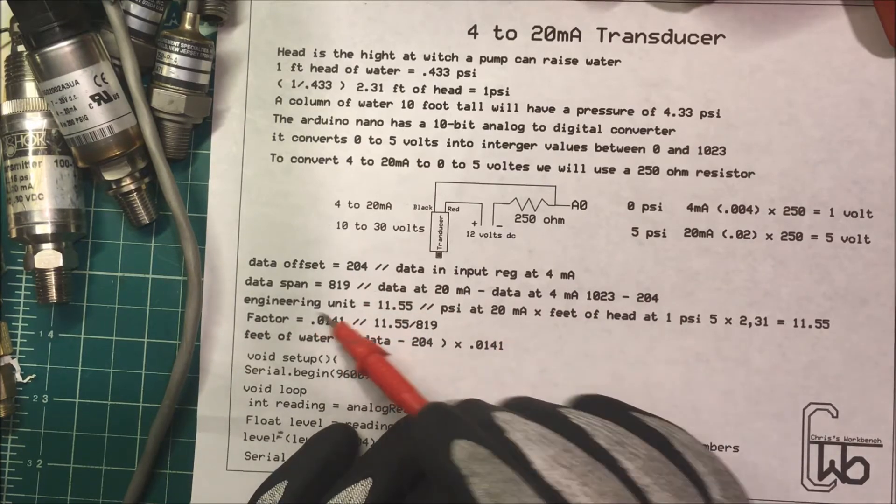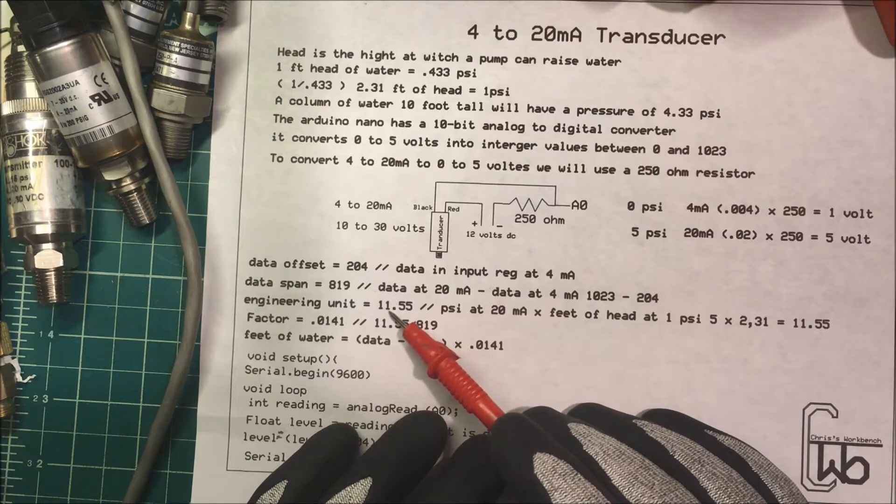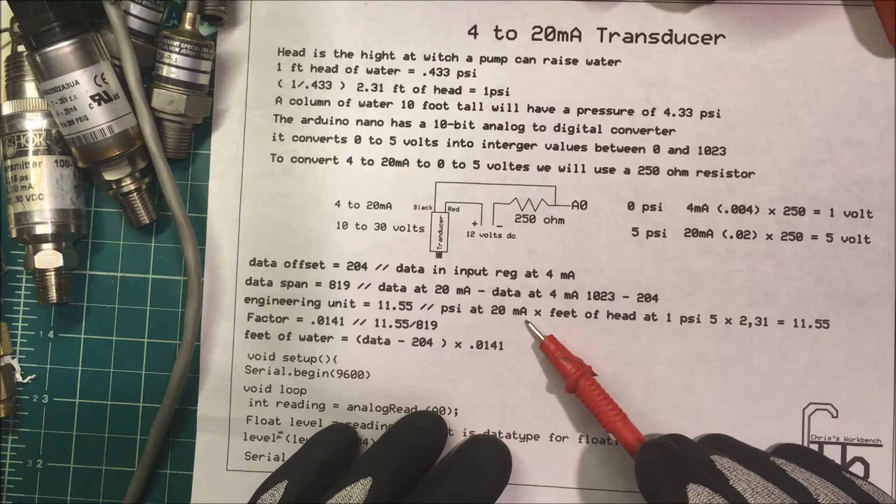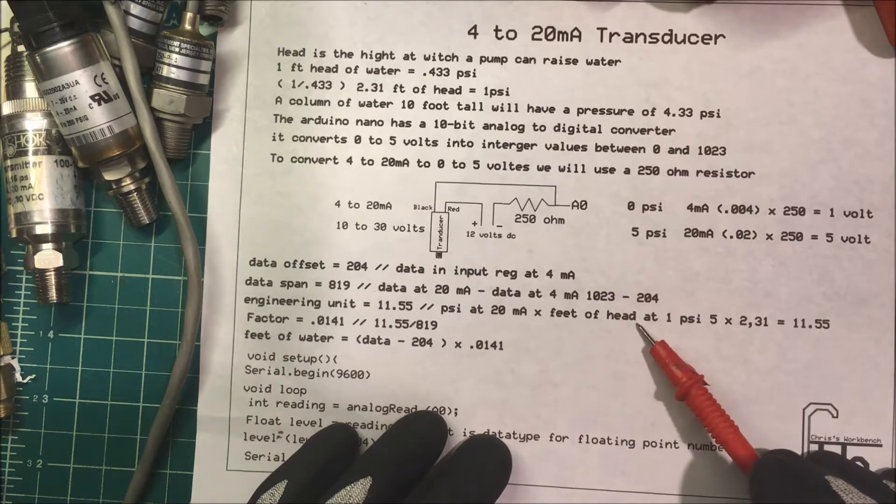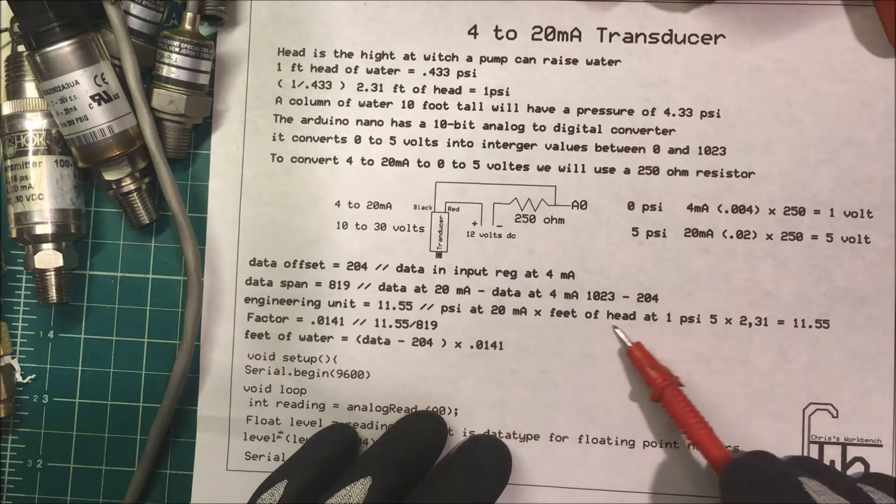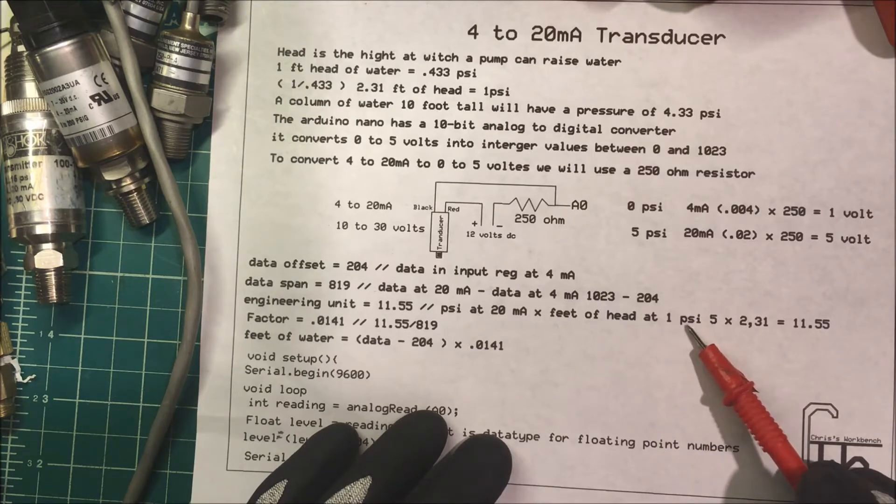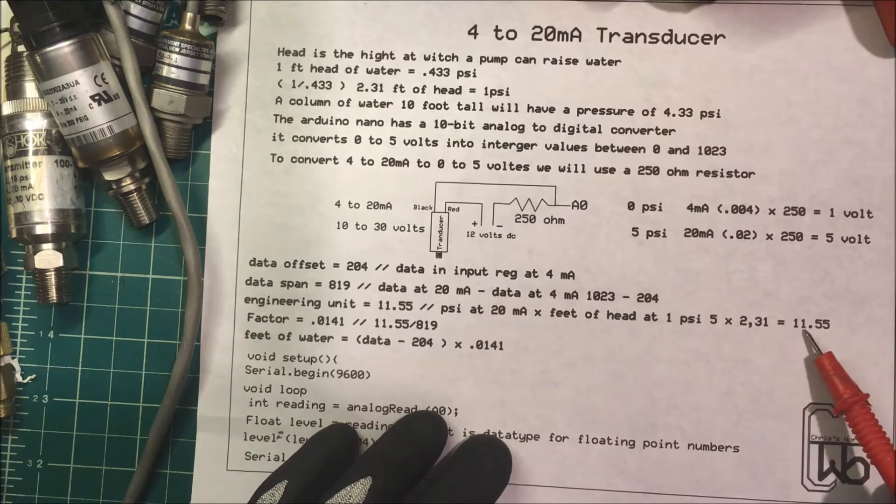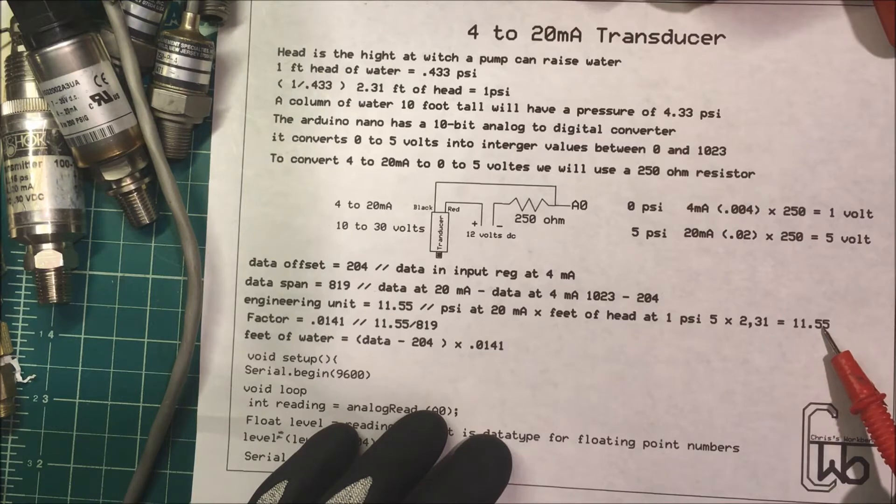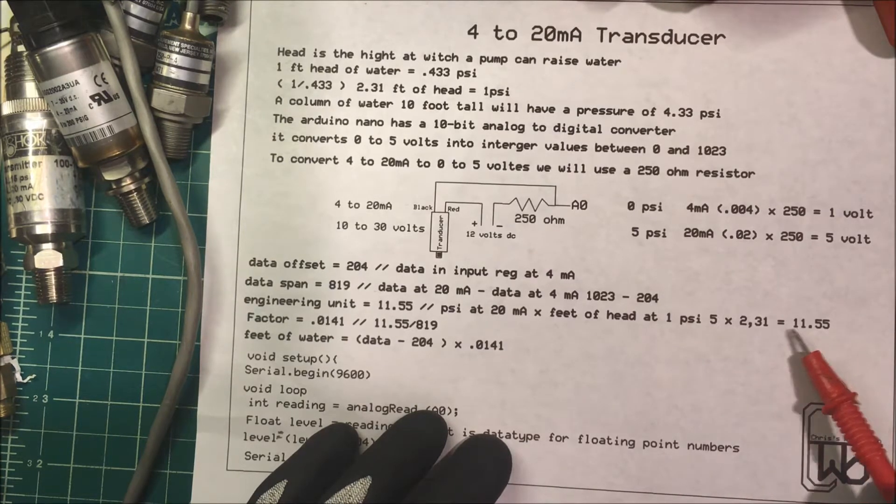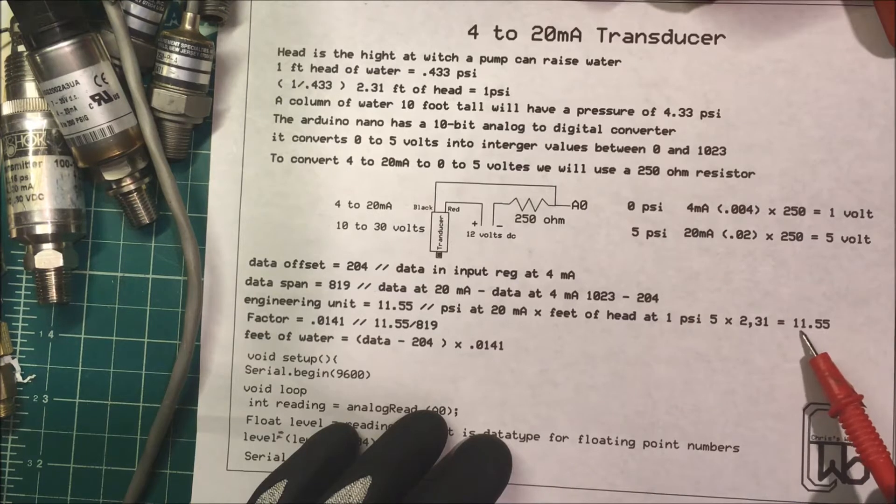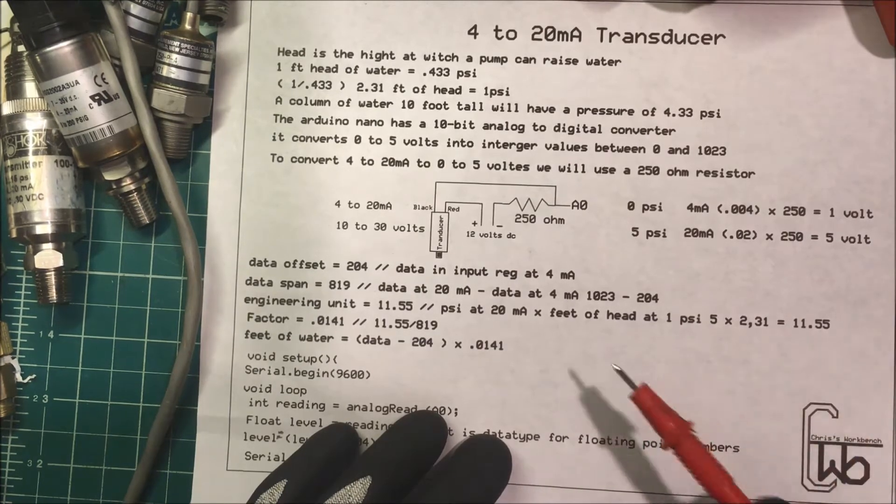Now we have an engineering unit and that's going to be 11.55. We get that by taking the pressure at 20 milliamps, which is going to be 5 times the feet of head at 1 psi. So feet of head at 1 psi is 2.31, so we take 5 times 2.31, which equals 11.55. Now at 5 psi it'll show us that we'll have a level of 11.55, a column of water that's 11.55 feet tall.